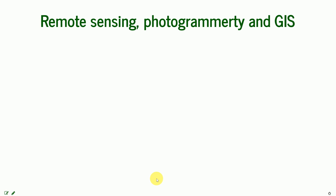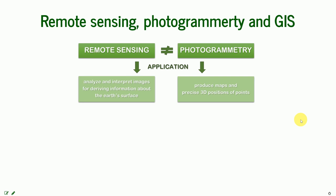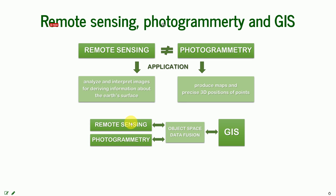We use multiple terms in this field: remote sensing, photogrammetry, and GIS. It is important to understand the difference between these terms. Remote sensing helps us analyze and interpret images for deriving information about the Earth's surface, while the application of photogrammetry is to produce maps and precise 3D positions of points in order to make measurements. Both remote sensing and photogrammetry are used within geographical information science.